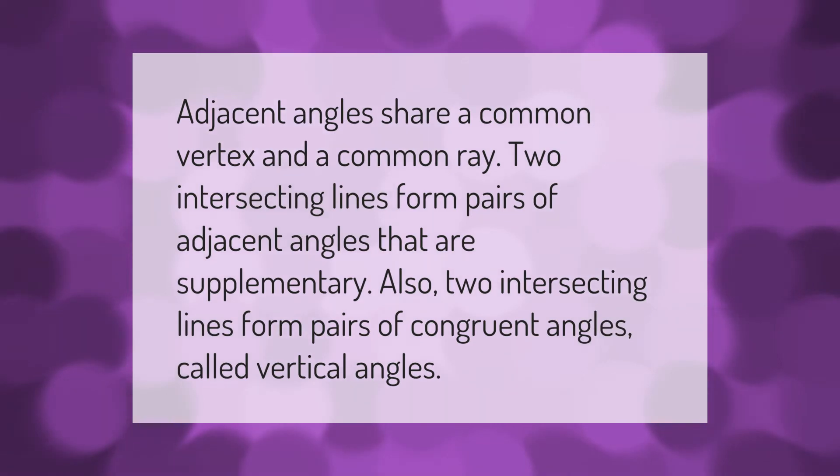Adjacent angles share a common vertex and a common ray. Two intersecting lines form pairs of adjacent angles that are supplementary. Also, two intersecting lines form pairs of congruent angles called vertical angles.